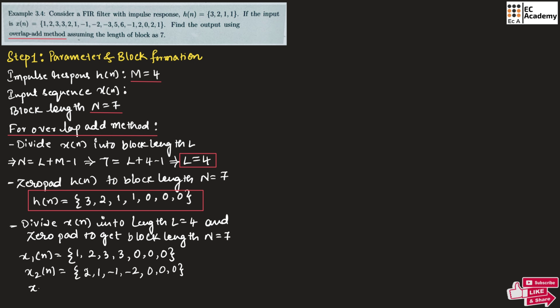We will find x3 of n by considering the next 4 values of x of n, which is minus 3, 5, 6, minus 1. Then we will append 3 zeros to make it length 7. Similarly we will find x4 of n by considering the last 4 values, which is 2, 0, 2, 1. For this we will append 3 zeros to make this length 7.